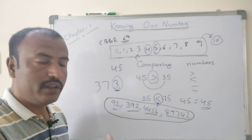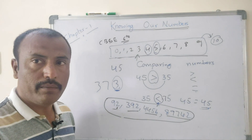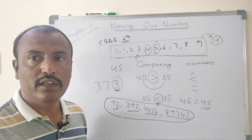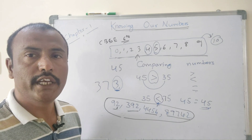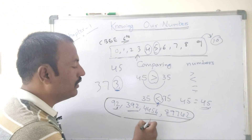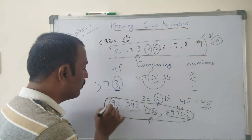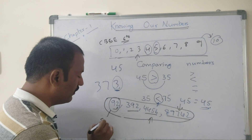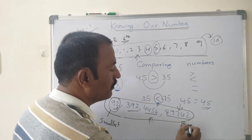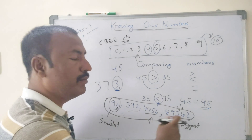Whenever we are comparing, initially we can compare with the number of digits. The number with fewer digits is the smallest, and the number with more digits is the biggest. This is the biggest number — 5 digits are there. This is the smallest — only 2 digits are there.